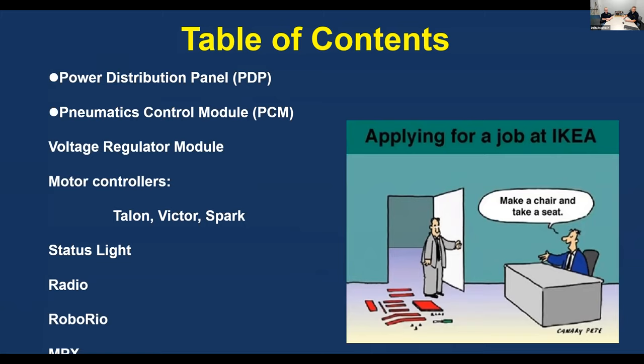On the table of contents, we're going to go through what all these mean: the power distribution panels, the MAC controller which is the PCM, the PDB, PCM, VRM — we'll break all those acronyms down. We're also going to go through the motion controllers that run all the manipulators, the status lights, the radio, the RoboRio, and different expansion ports available on the RoboRio.